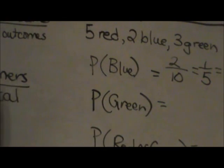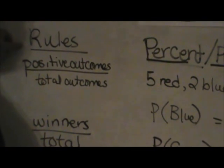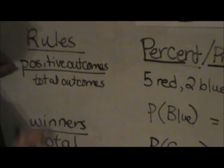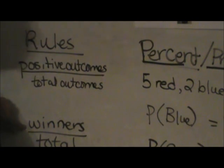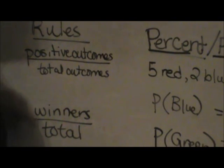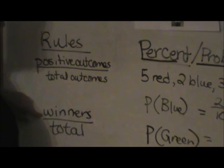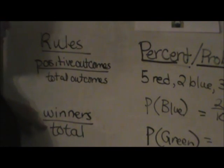Okay, so what are the rules? Let's look at the rules of probability and percent. The rules are very simple. It's your positive outcomes, or another way to think about it is your winners, out of the total number of outcomes. So you can think of it as positive outcomes out of total outcomes or what are the winners out of the total.